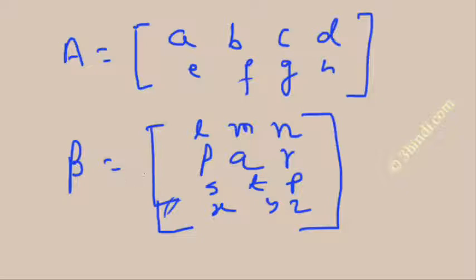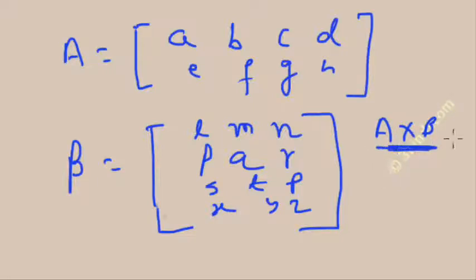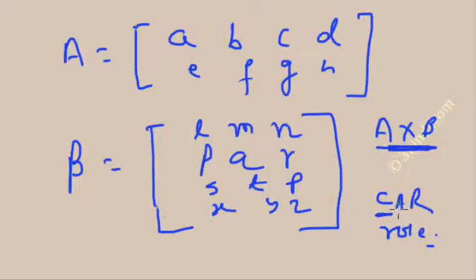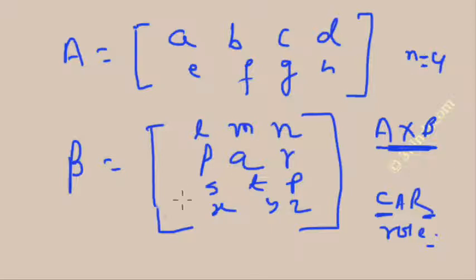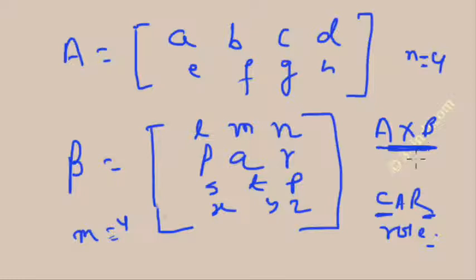I want to calculate A cross B. To multiply the two matrices, the first condition is the CAR rule — the number of columns of the first matrix should be equal to the number of rows of the second matrix. Here you can see that the number of columns in the first matrix is 4, and the number of rows in the second matrix is also 4. So N equals 4 and M equals 4. Since M and N are equal, you can proceed with multiplication. This will be a valid multiplication.